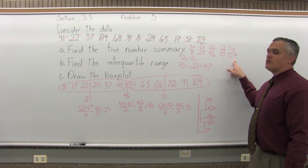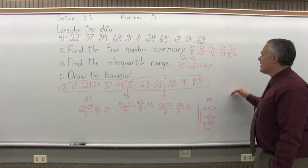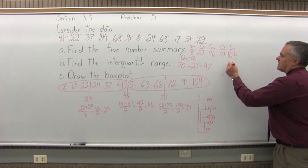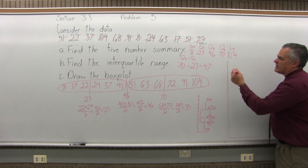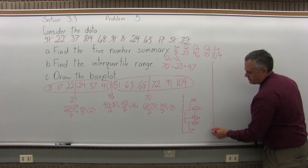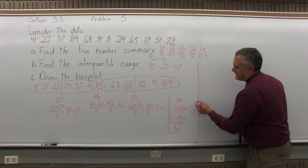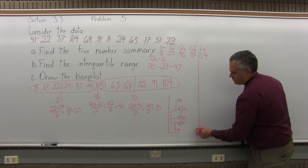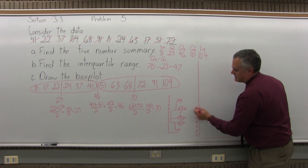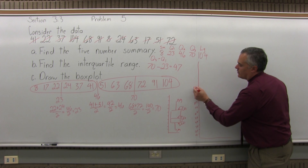My biggest data value is 104, so going by 10s is a sensible number scale. If I put 11 lines, that gets me up to 110, which is good. I'll label them 10, 20, 30, 40, 50, 60, 70, 80, 90, 100, 110.